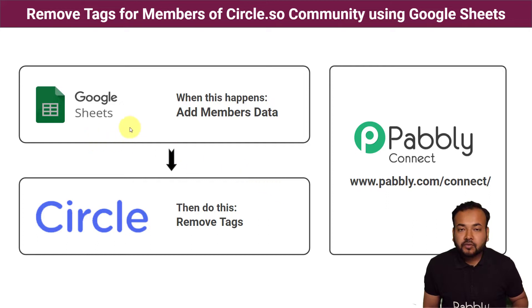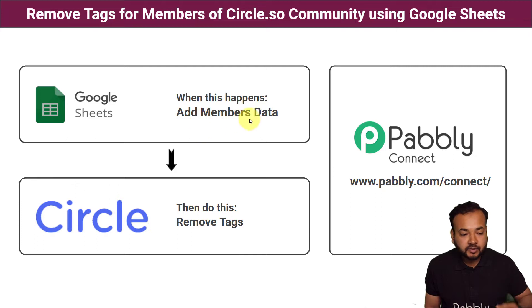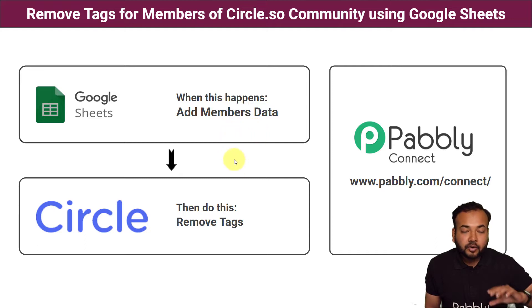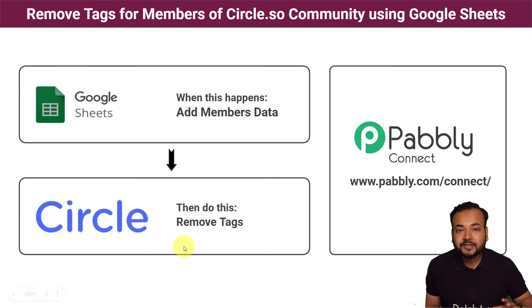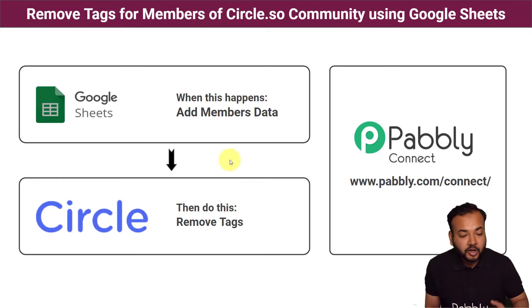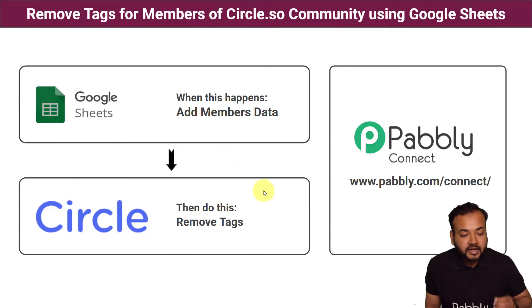Here we have taken the example of Google Sheets where you add the data of the members you have in your Circle.so community. As and when you mention here in front of a member's name that their subscription is expired, the tags from those members whose subscriptions got expired will be removed automatically from Circle.so community. Otherwise you would have to manually sort out the details of the members and manually remove the tags from Circle.so community, which would be a big problem.